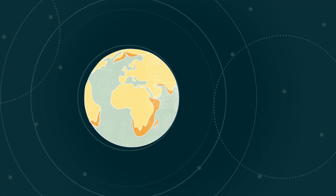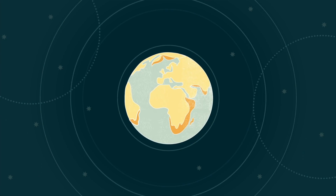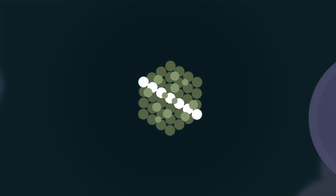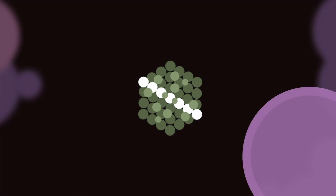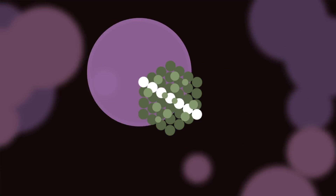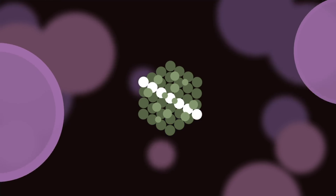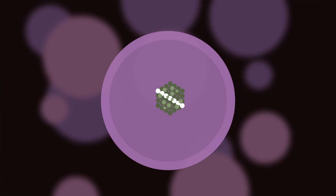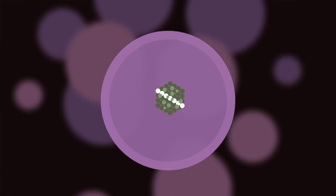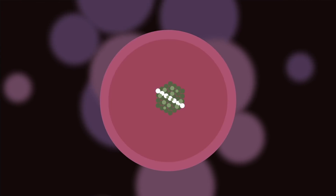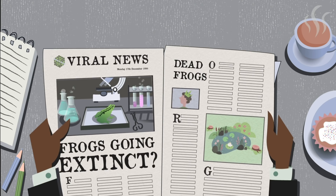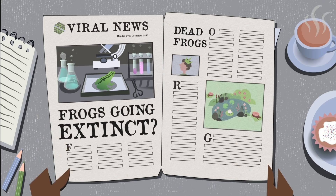Viruses, however, are as old as the earliest forms of life on Earth. Viruses reproduce by invading the body of a living organism and hijacking its cells. They then use the host cell's own machinery to make copies of themselves.